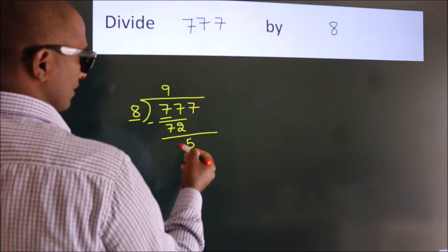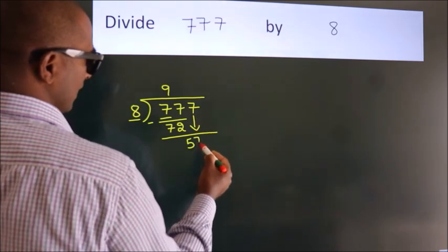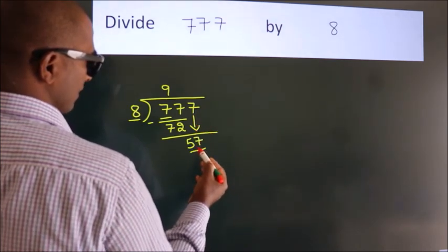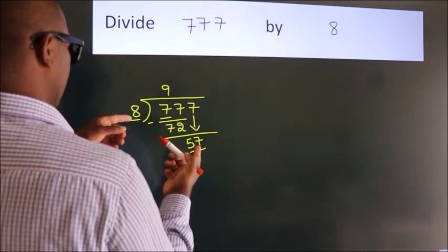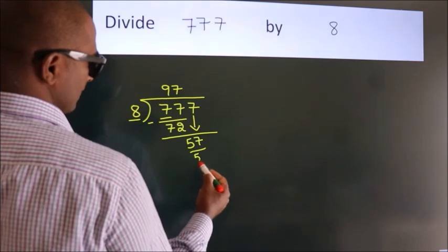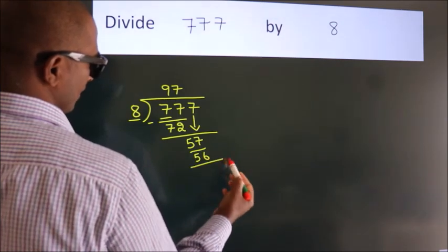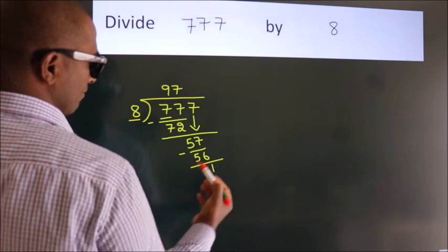After this, bring down the beside number. So 7 down. So 57. A number close to 57 in the 8 table is 8 sevens, 56. Now we subtract. We get 1.